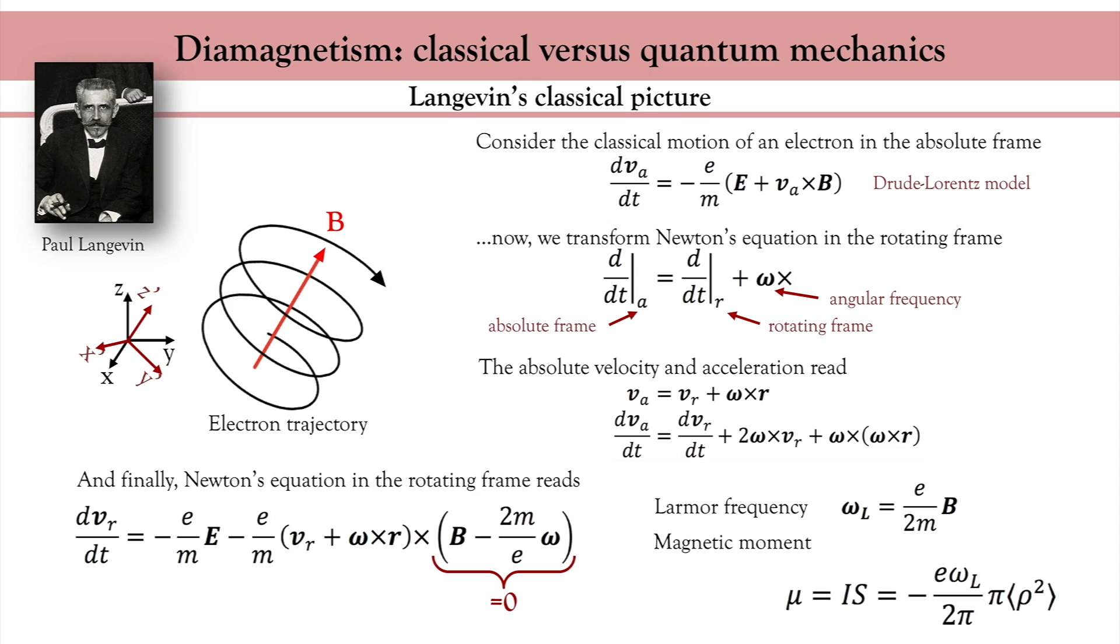Since I have a circulating current, I can define the magnetic moment mu as the charge current I times the surface S. This is something we have seen in the introductory lecture. More explicitly, I can write the magnetic moment as a function of the magnetic field, and I observe that it opposes this magnetic field. In other words, when I apply a magnetic field on a collection of itinerant electrons, the magnetic moment generated by those circulating itinerant electrons points against the magnetic field. This is called diamagnetism.